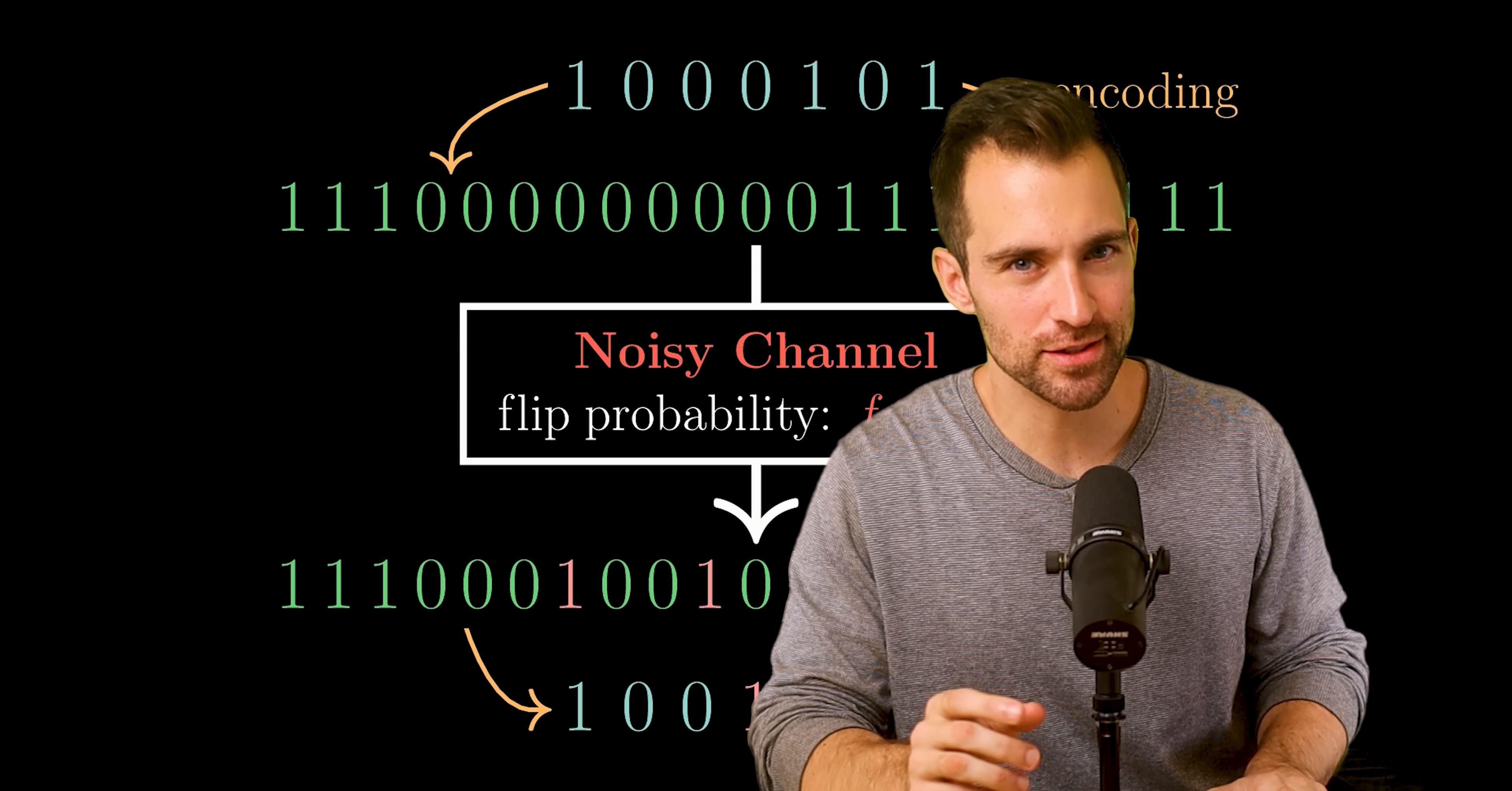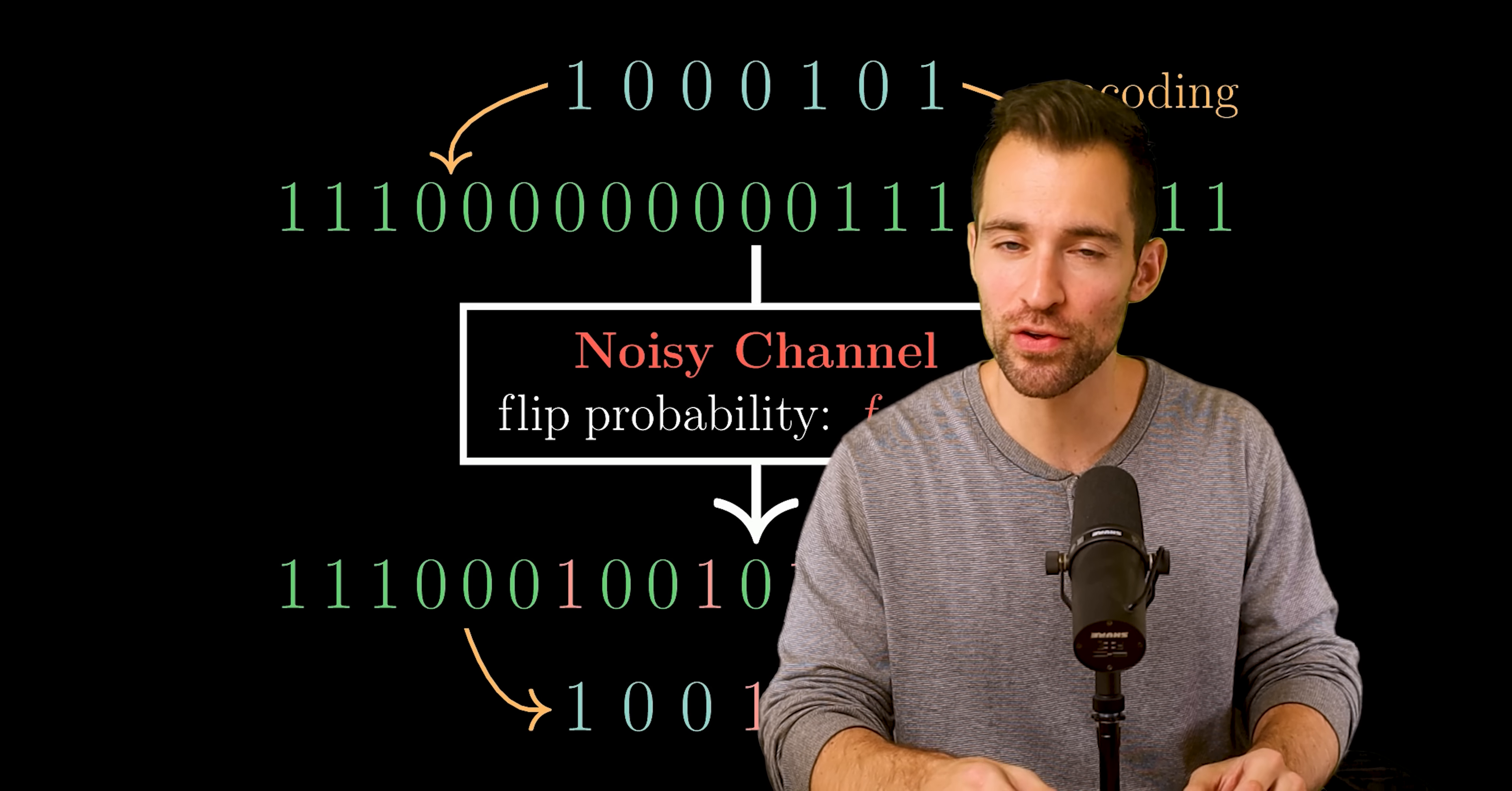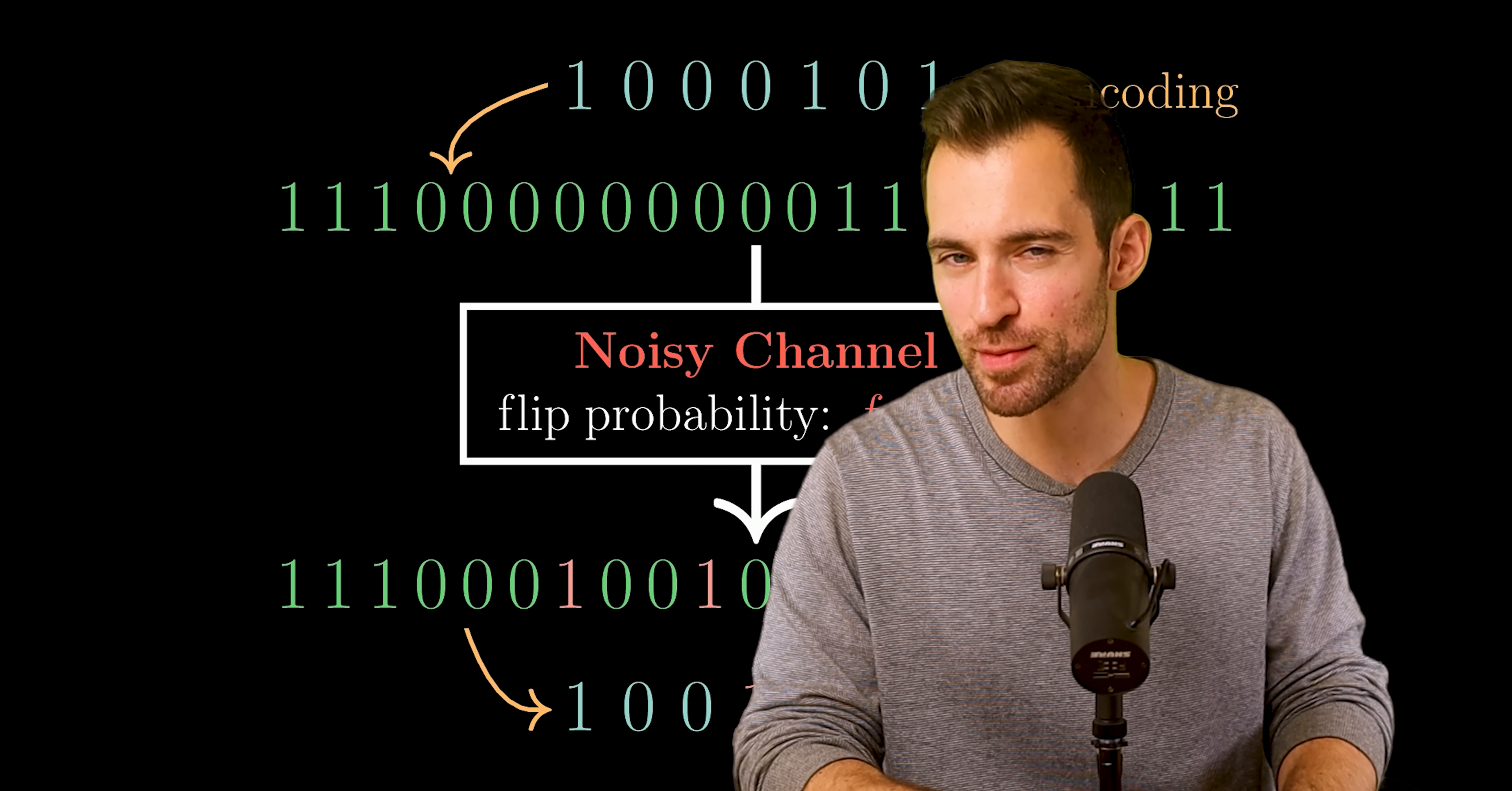Now the question is, is this the best we could have done? When it comes to the error probability, no. If we repeated bits 10 times instead of 3 times, that would have a much smaller error probability. But that's not all we care about. Doing that also slows our message down by 10 times. So we also care about speed.